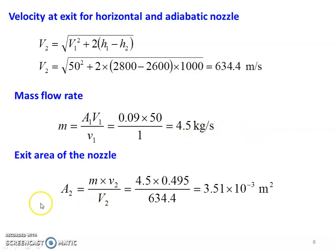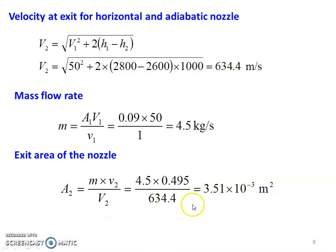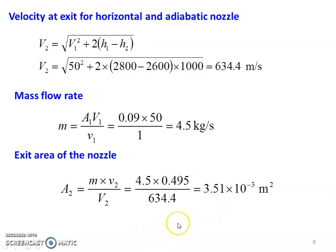Exit area: using the continuity equation, A2 equals M into specific volume at exit divided by velocity at exit. Substituting: M equals 4.5 into 0.495 divided by 634.4 equals 3.51 into 10 power minus 3 meter square. So the velocity at exit is 634.4 meters per second, mass flow rate is 4.5 kilograms per second, and exit area is 3.51 into 10 power minus 3 meter square.